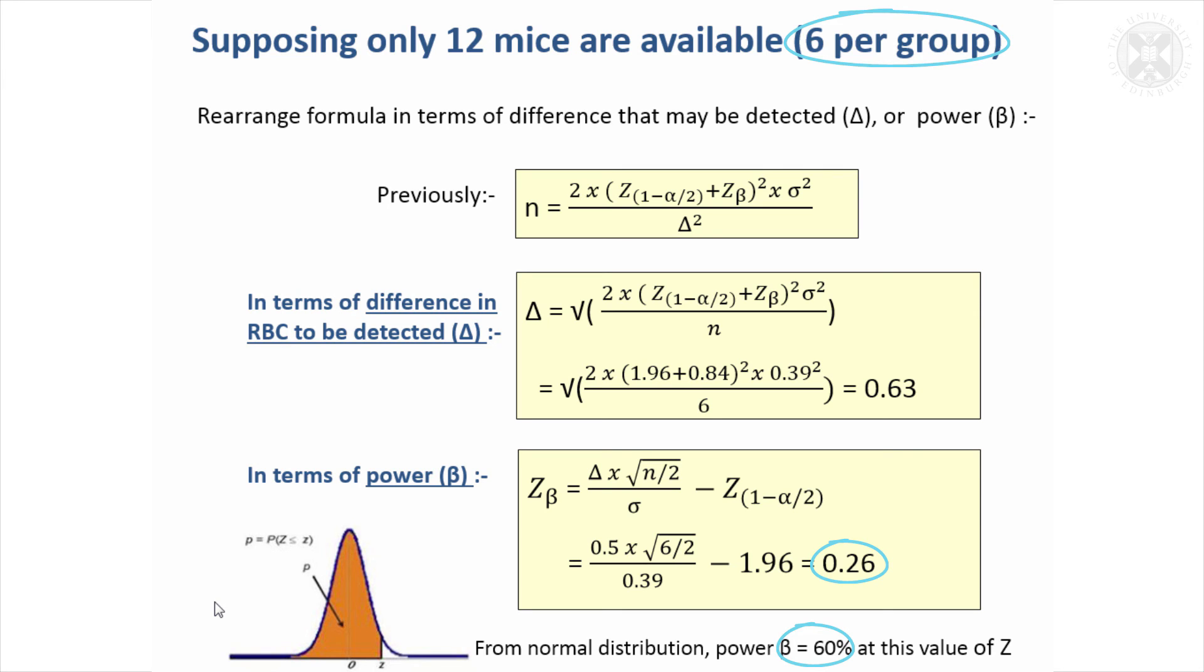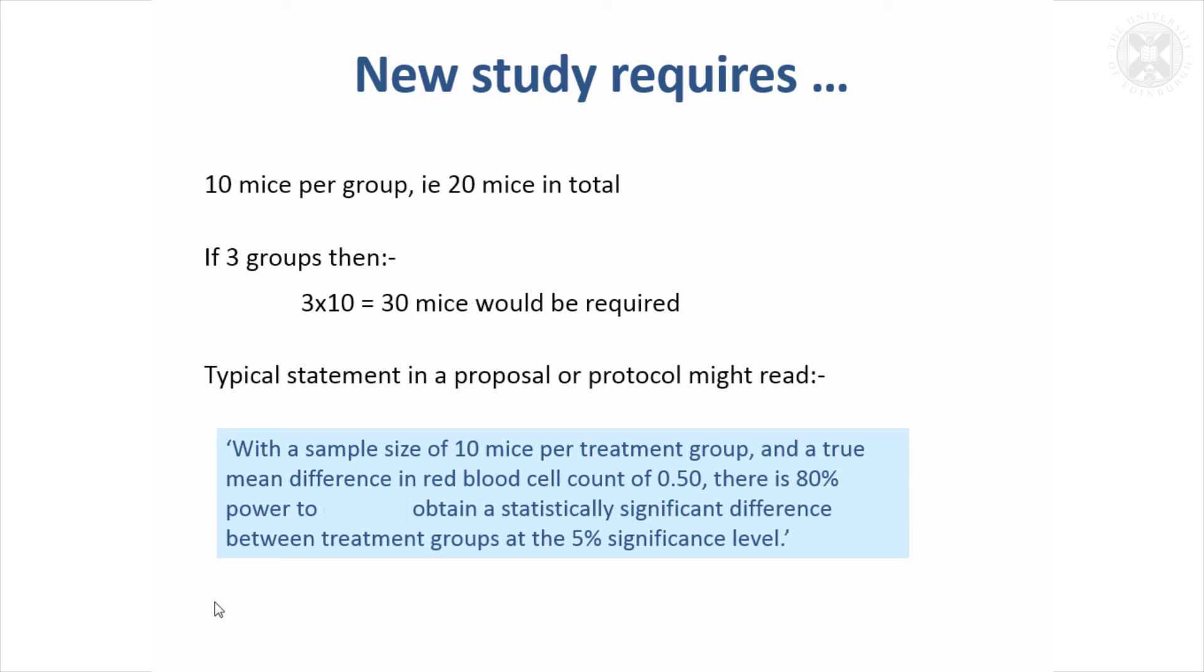That's quite a low level of power, so there's a 40% chance that you'd do the study and find out absolutely nothing. You might want to think about is that study still worth doing. If you put something like that in a statement in a proposal and you just said 60%, people would immediately zero in on that and say well this study's not got enough power, so you definitely wouldn't want to be in that situation if you're applying for funding.